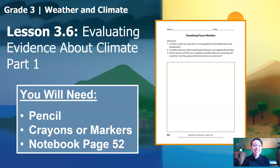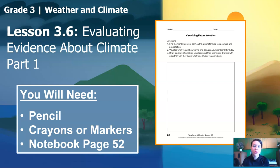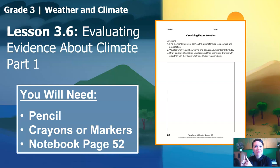For this lesson, you will need a pencil or something to write with, and you could really use some crayons or markers. If you don't have crayons or markers, it's okay. You're also going to need notebook page 52, called Visualizing Future Weather.